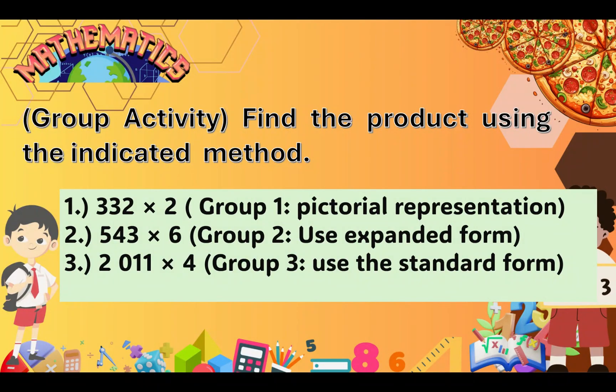And now, let's have a group activity. Find the product using the indicated method. For group 1, you have to answer 332 times 2 using pictorial representation. For group 2, you have to answer 543 times 6 using expanded form. And for group 3, find the product of 2,011 times 4 using the standard form. Let's do it.